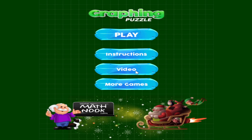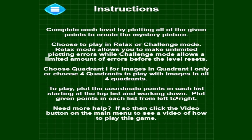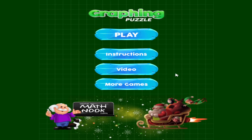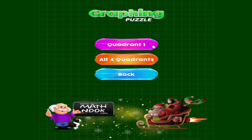The Video button will take you to the page on MathNook that has this video in case you'd like to see it again. The Instructions button just tells you how to play. Let's click Play — you have the choice of playing on quadrant one, where all X and Y values are positive, or you can choose to play on all four quadrants, or go back to the main menu.